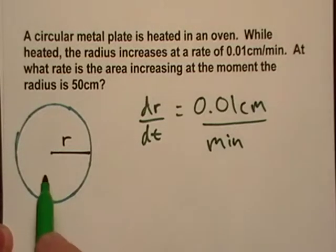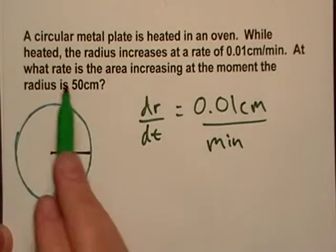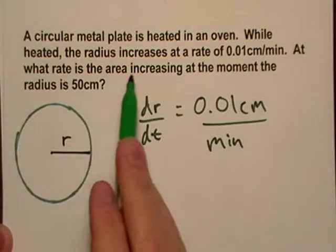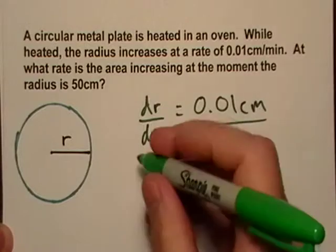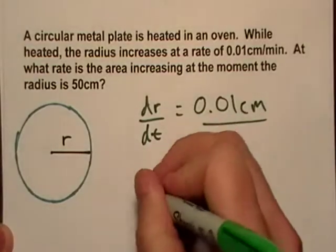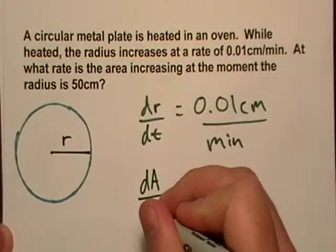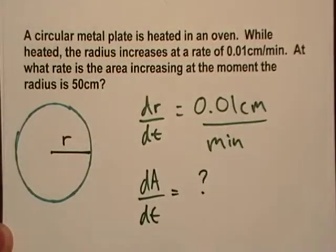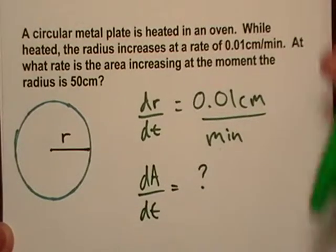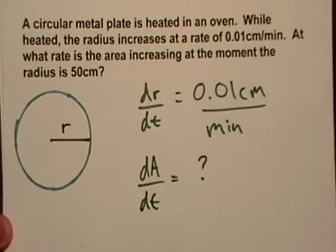Now, we're looking at what rate is the area increasing at the moment the radius is 50 centimeters. So basically what we're looking for is the derivative of area over time. And we don't really know that right now. So what are we going to do? Let's see here.